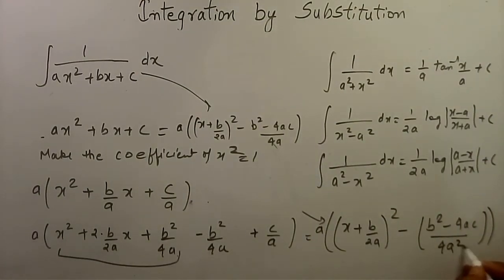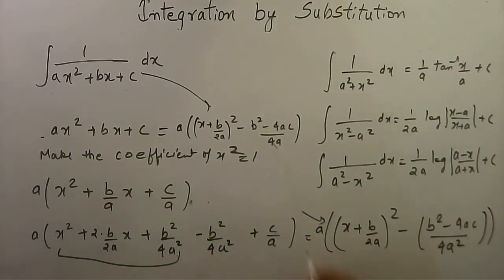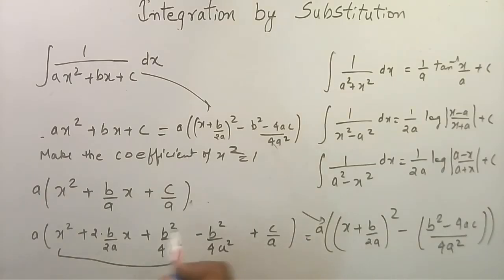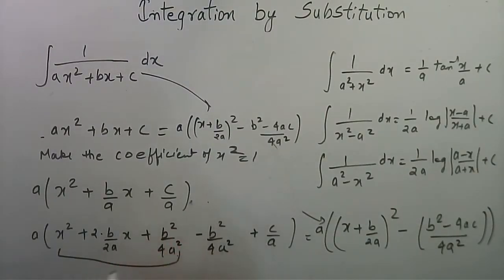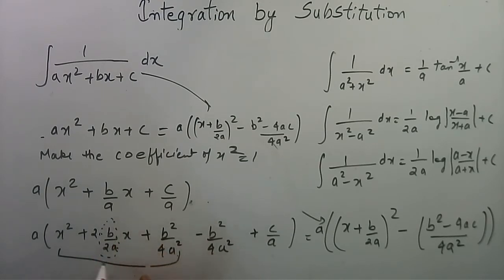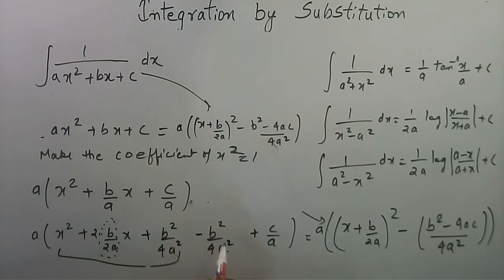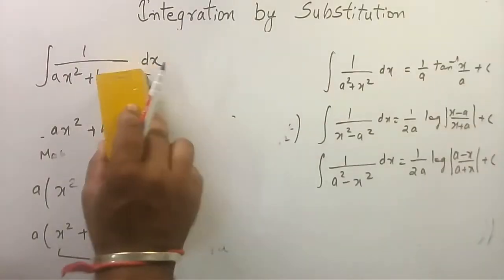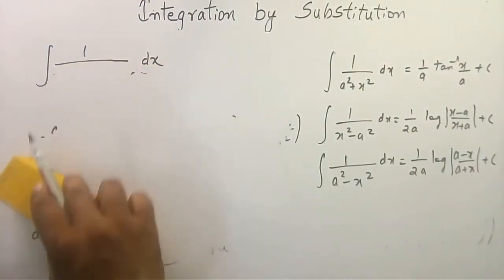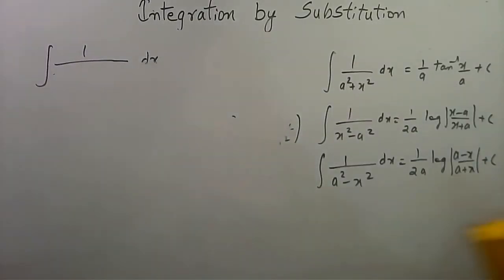To clarify: we are adding and subtracting the square of the middle term's half-coefficient, which is b/2a. The square of b/2a is b²/4a². Both added and subtracted terms are additive inverses of each other. Now we are taking an example for understanding this particular type of integral.